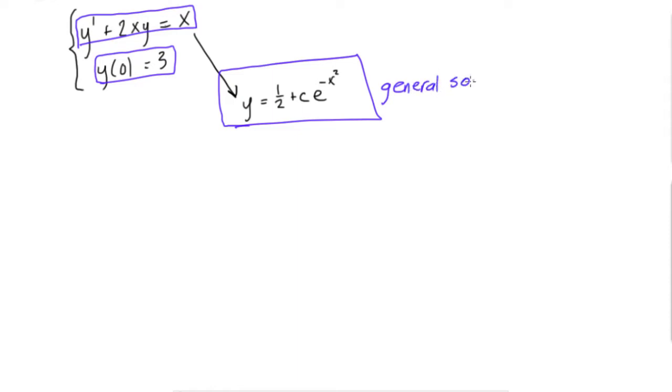You'll notice that it has this c in here. This is an arbitrary constant, and so we can pick different numbers for this constant, and it'll give us slightly different actual solutions.